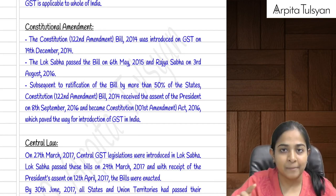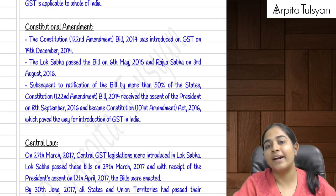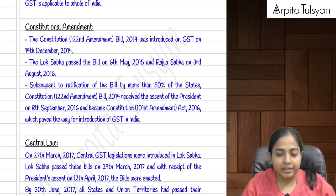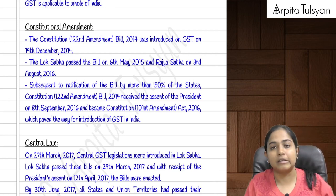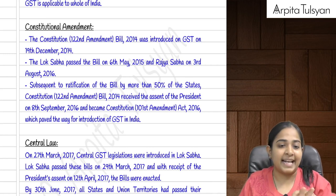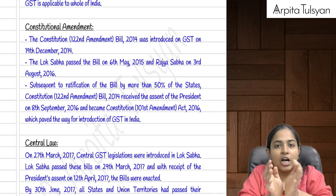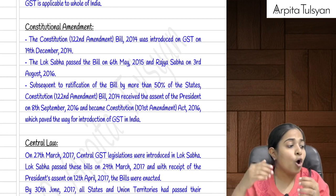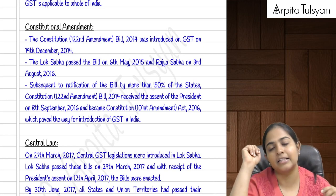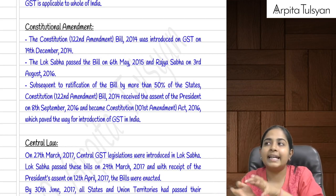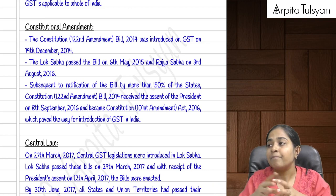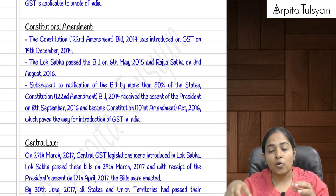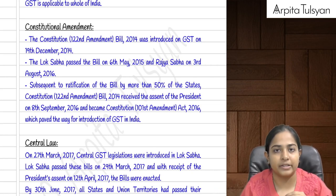Whenever we want to pass any particular act, there should be a bill. For GST, we required a constitutional amendment because earlier the central government had exclusive power to collect certain taxes — example income tax and service tax under the old regime — and state governments had powers to collect other taxes, example VAT.